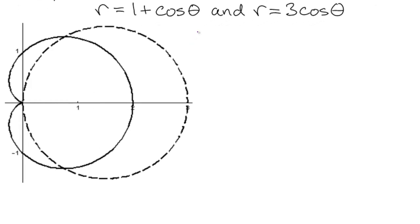So let's set the equations equal to each other and solve. 1 plus cosine theta equals 3 cosine theta. So 1 equals 2 cosine theta, or cosine theta equals 1 half. Cosine theta equals 1 half when theta equals pi over 3 and 5 pi over 3.